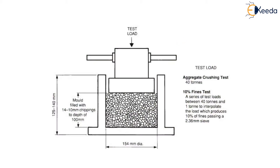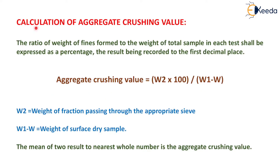This is the apparatus of the aggregate crushing test. For calculation of aggregate crushing value, the ratio of weight of fines formed to the weight of total sample in each test shall be expressed as a percentage, recorded to the first decimal place. Aggregate crushing value equals W2 × 100 / (W1 − W), where W2 is the weight of fraction passing through the appropriate sieve and W1 − W is the weight of the surface dry sample. The mean of 2 results to the nearest whole number is the aggregate crushing value.